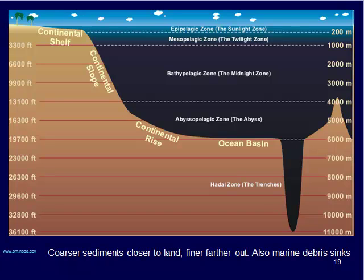Also, in the upper portion of the water column — the sunlight zone — we have microscopic critters floating in the water column whose shells might be made of calcite or silica. Once they die, they settle to the ocean floor and build up over time. And of course, if a whale or fish dies out in the open ocean, it sinks to the bottom and we get some of that detritus building up as well.